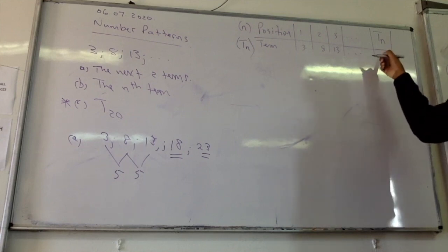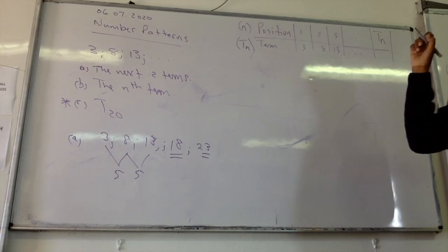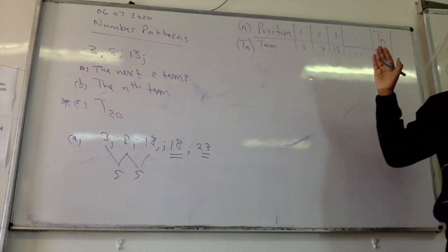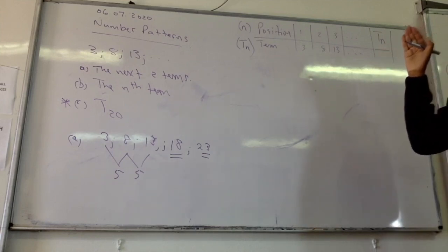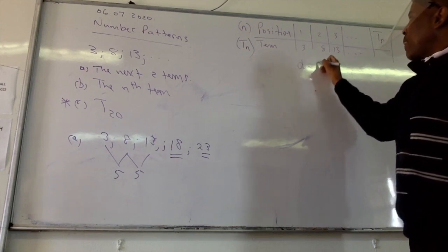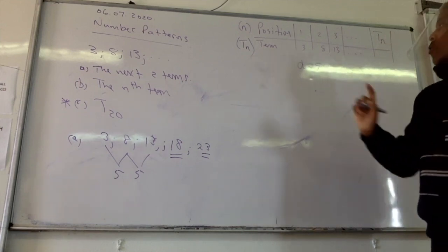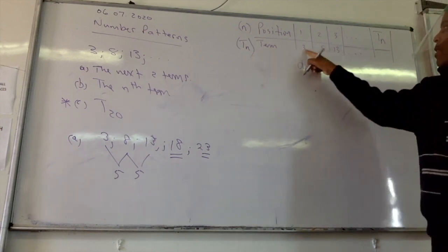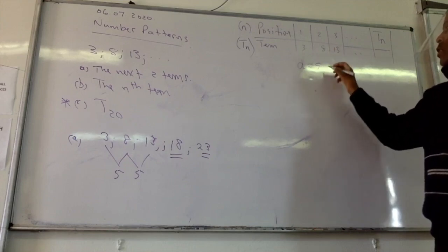So I want us to find Tn, and we are going to be using the relationship between d and the position. What is the constant difference here, right? So d is 5, because 8 minus 3 is 5, 13 minus 8 is 5, so d is 5, right?